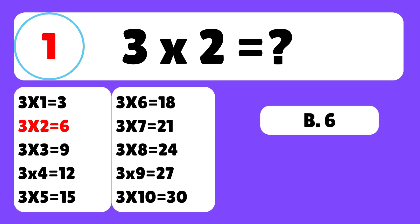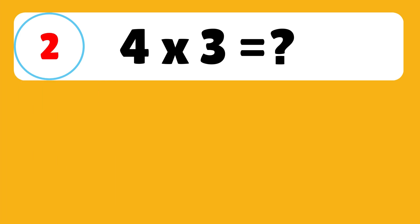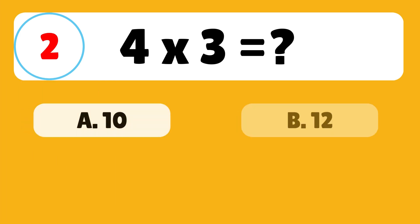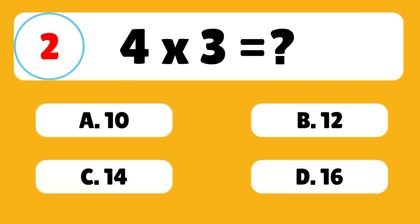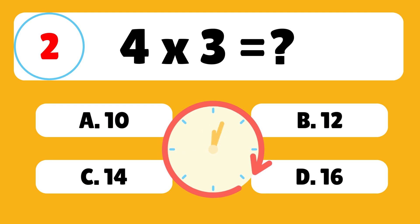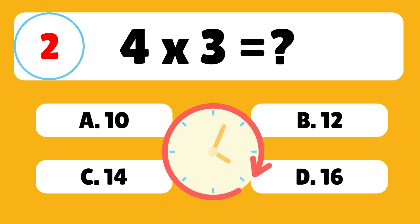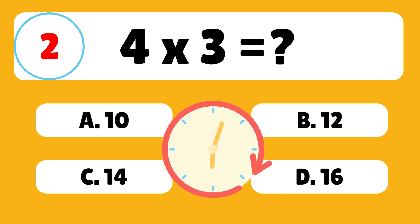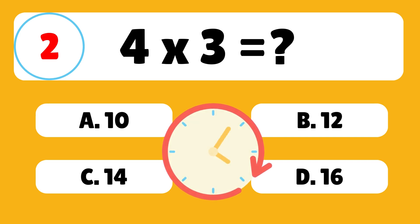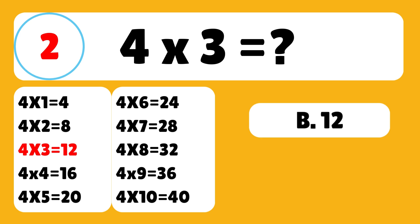Question 2. What is 4 times 3? The answer is B. 4 times 3 is equal to 12.